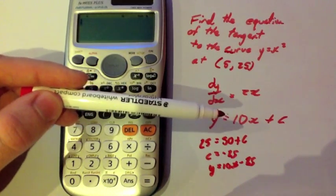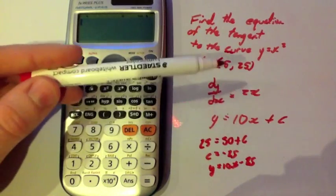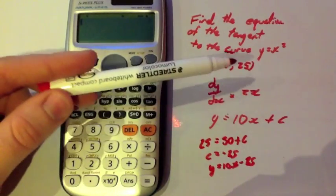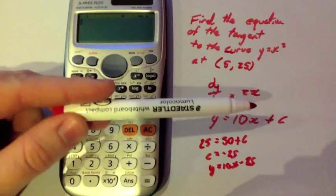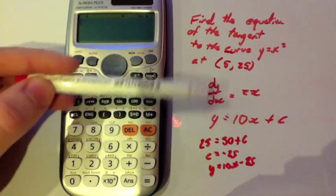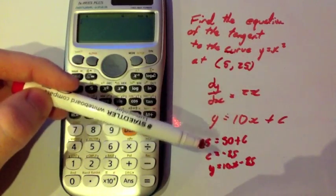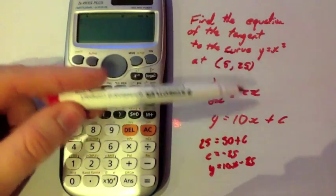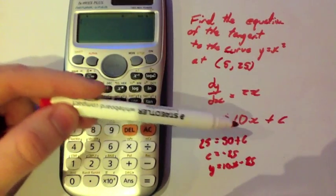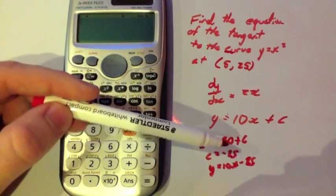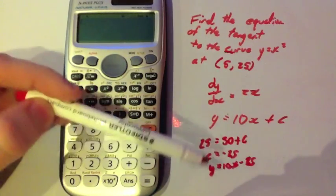If it was the normal, remember to do the negative reciprocal. Then put in your x value of 5 and your y value of 25 and work out your c. In this case, if you put 25 in for y, you get 25 equals 50 plus c, so c equals minus 25, and you get the equation of the tangent.